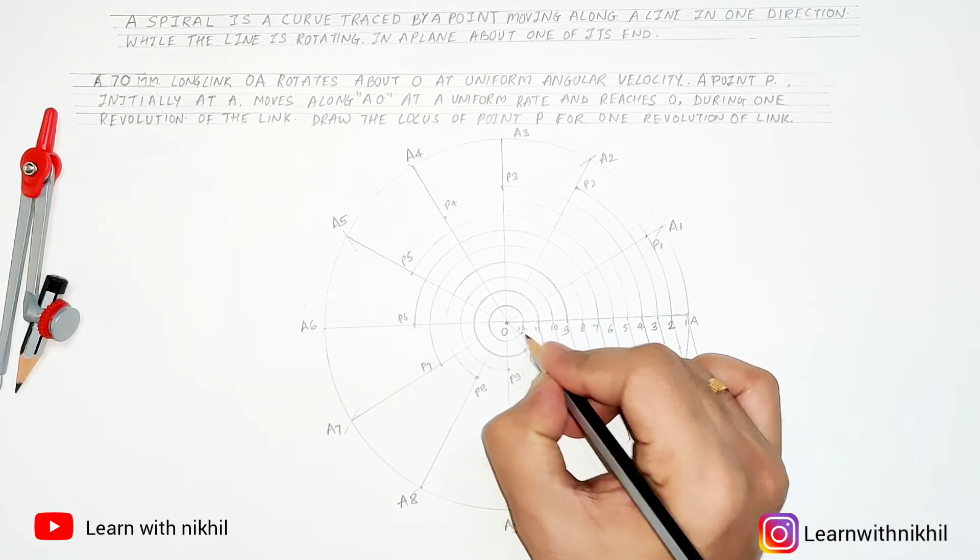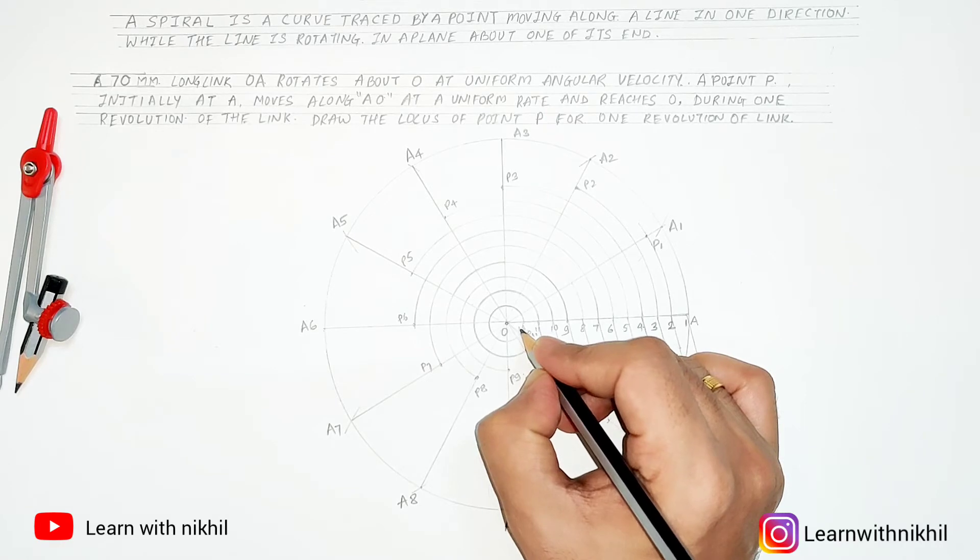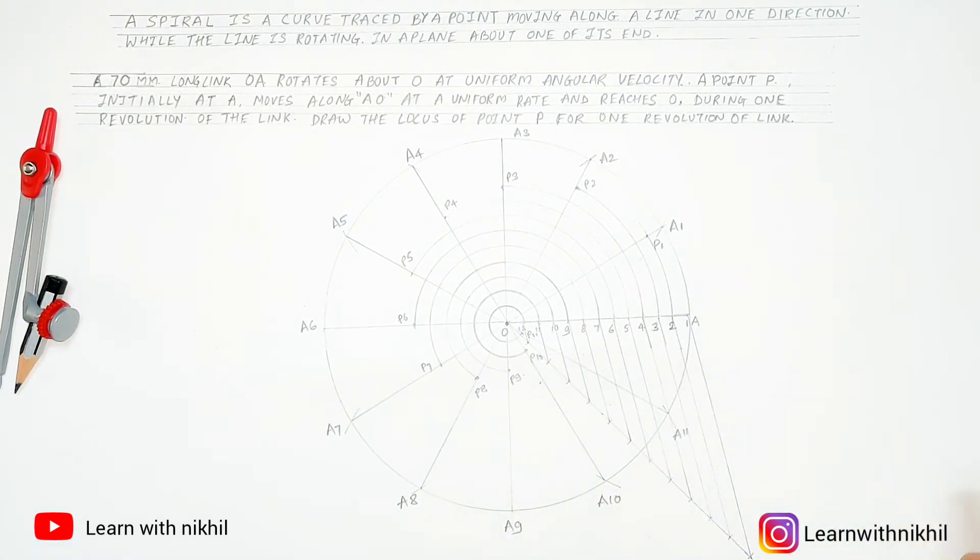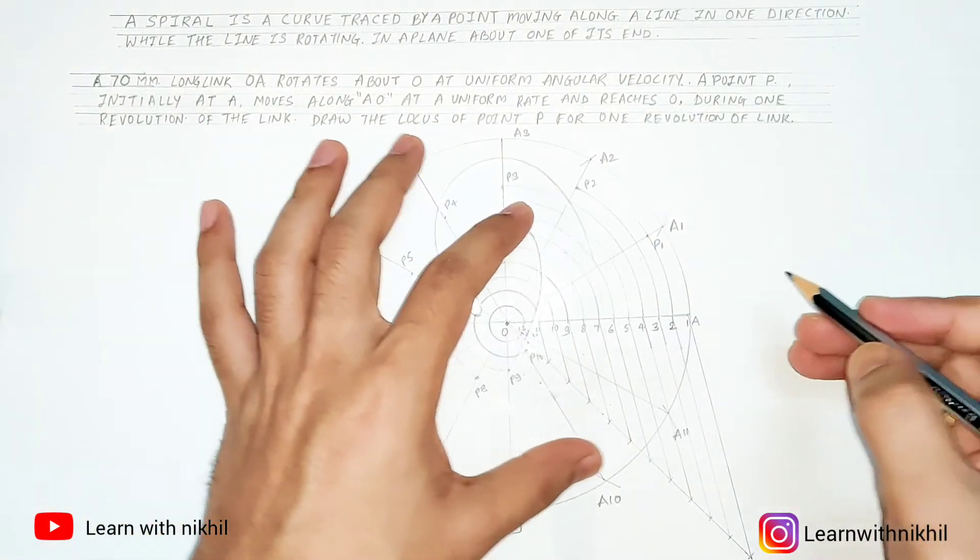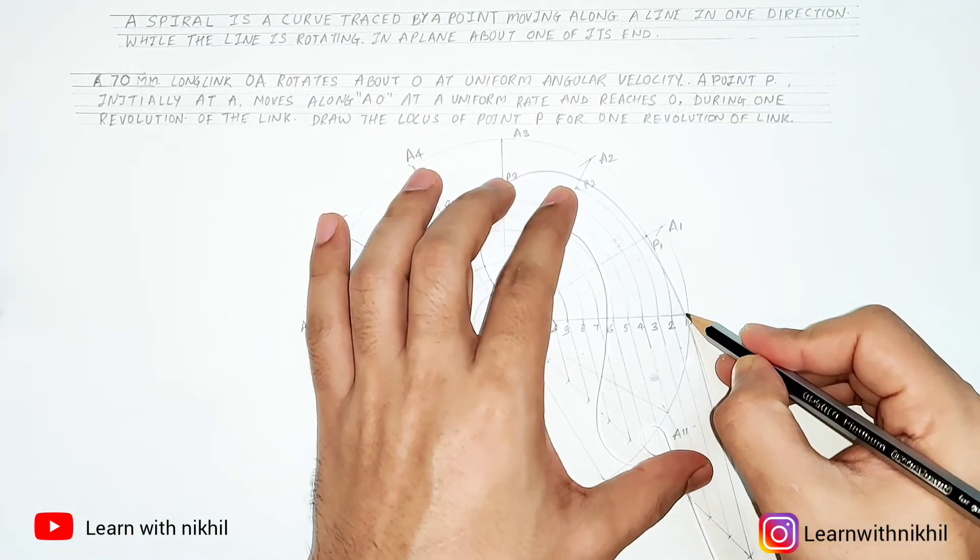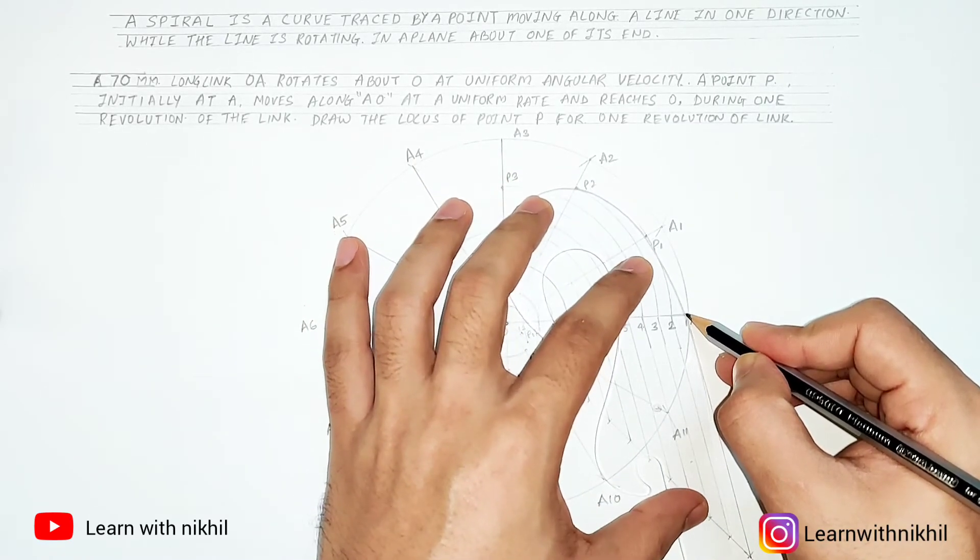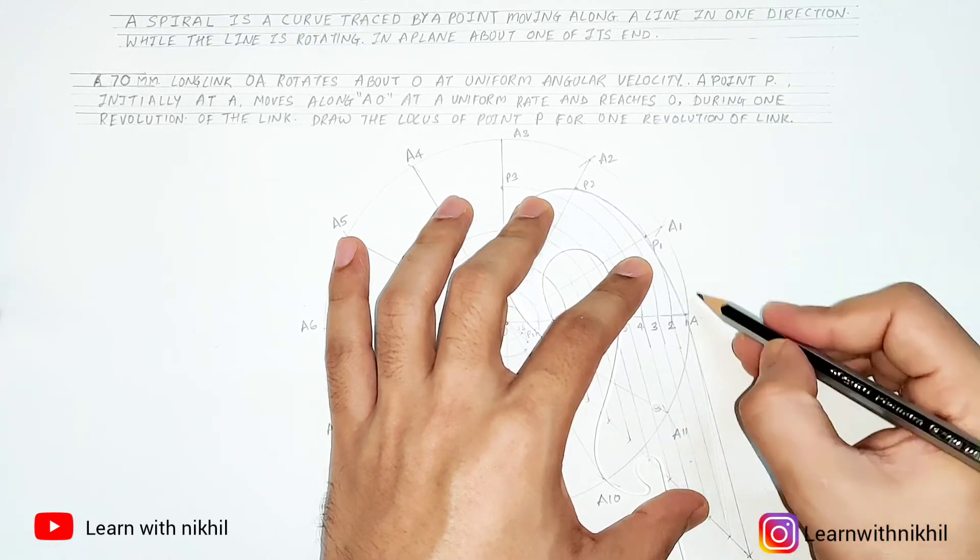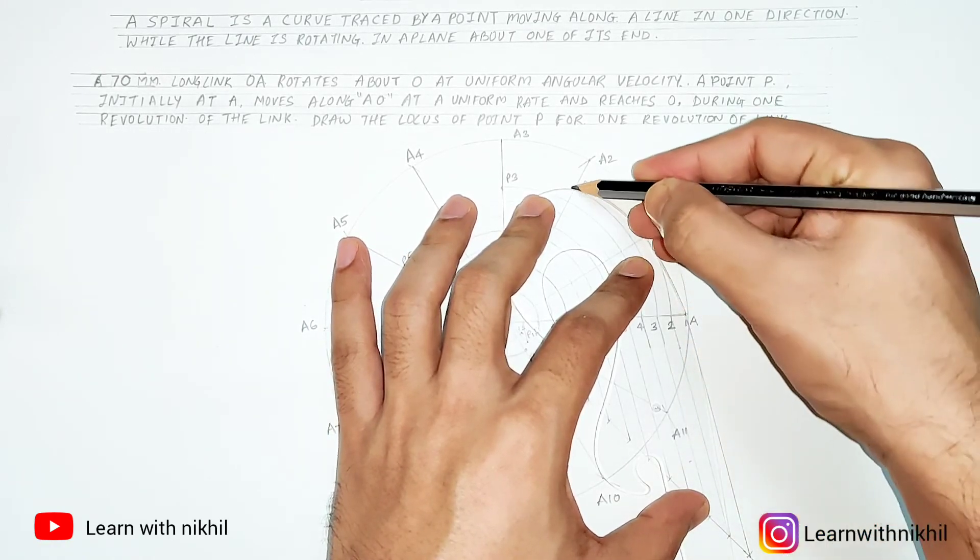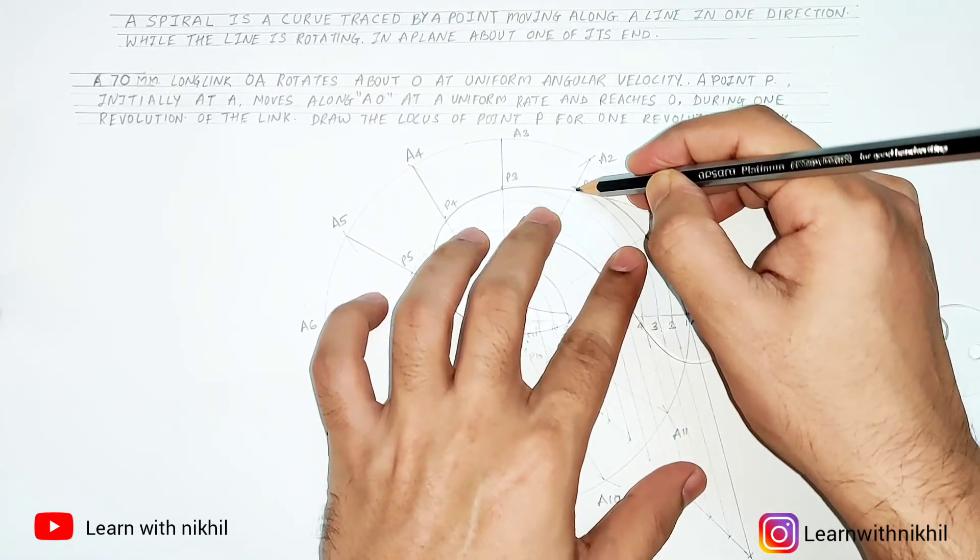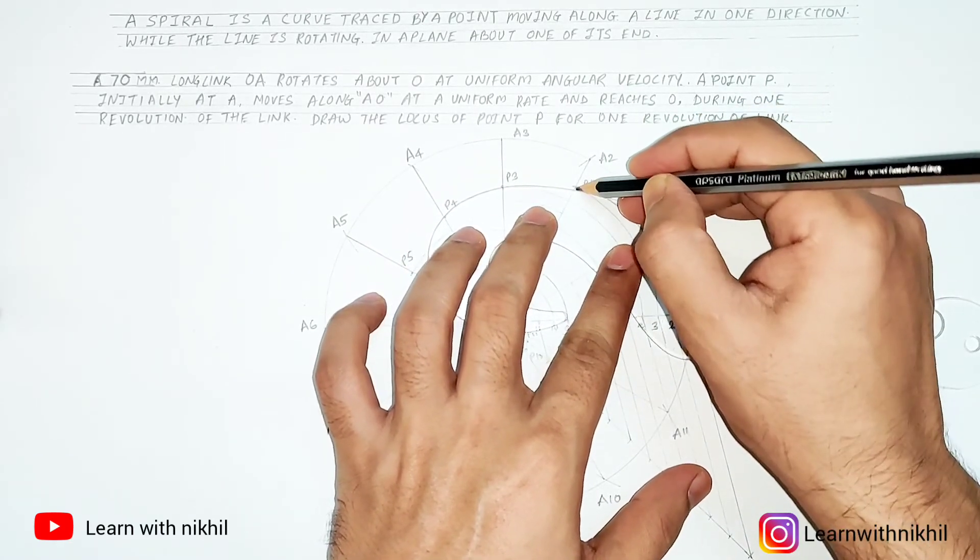After marking all these points till P12, you have to just join these points using French curve. Aligning three or more than three points on the French curve, you have to join them. And after joining all these points, the curve which you get is called as a spiral.